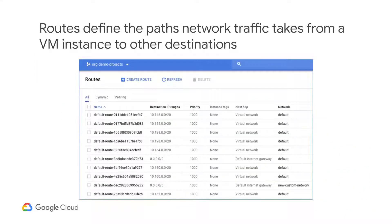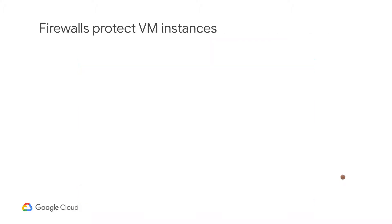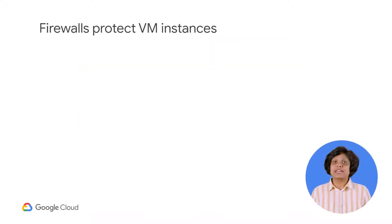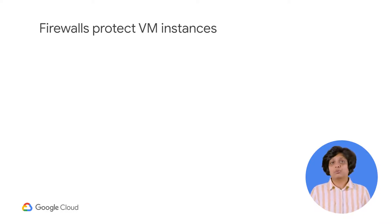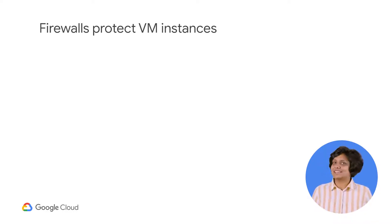Every route consists of a destination and a next hop. Traffic whose destination IP is within the destination range is sent to the next hop for delivery. GCP firewall rules protect virtual machine instances from unapproved connections, both inbound and outbound, known as ingress and egress respectively.